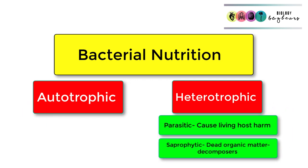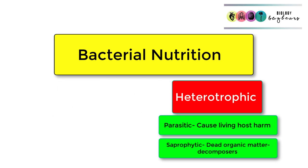Heterotrophic bacteria, there are two categories. The first of which is parasitic, so parasitic bacteria take in food from a living host and they usually cause that host harm. Then you've got saprophytic bacteria, they feed on dead organic matter and so are often classed as decomposers.